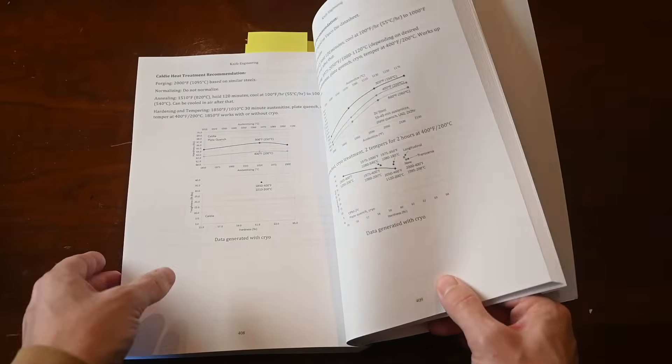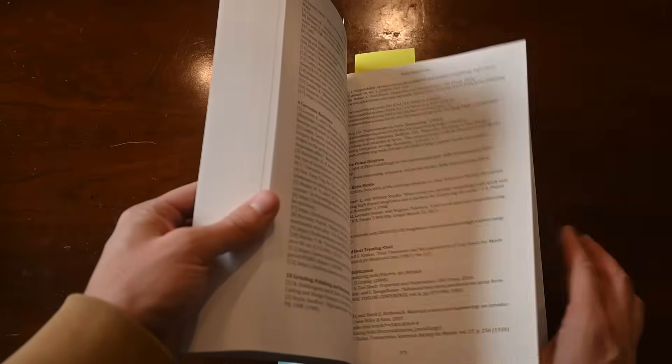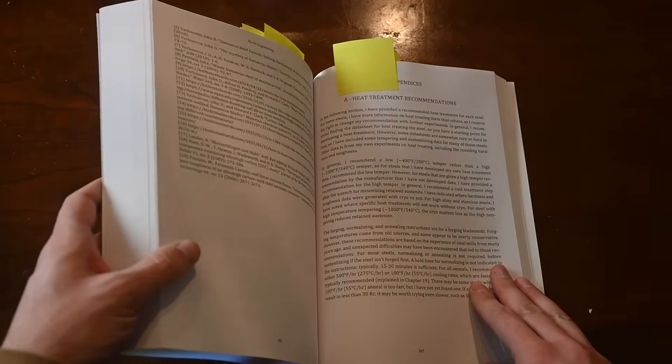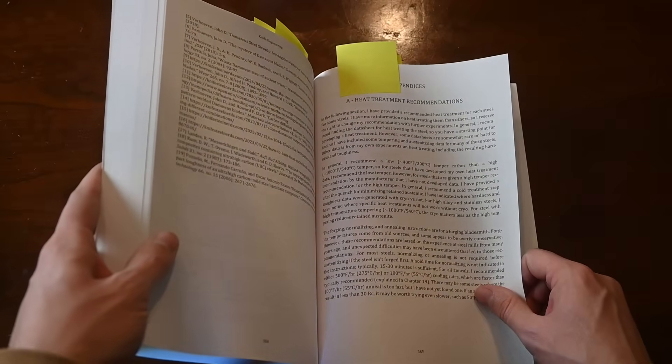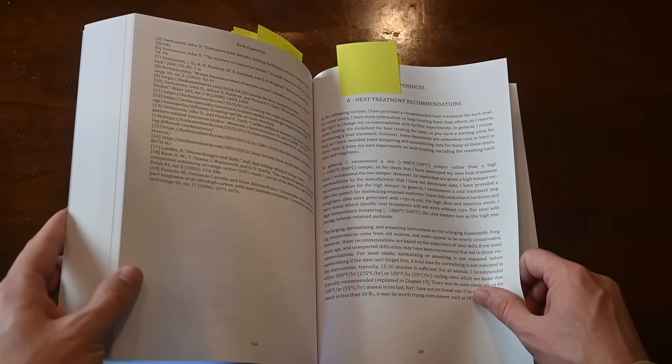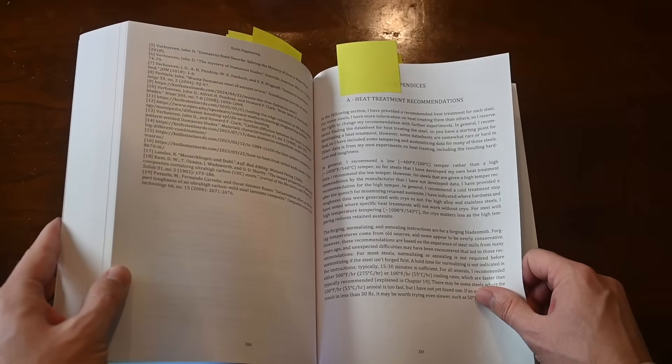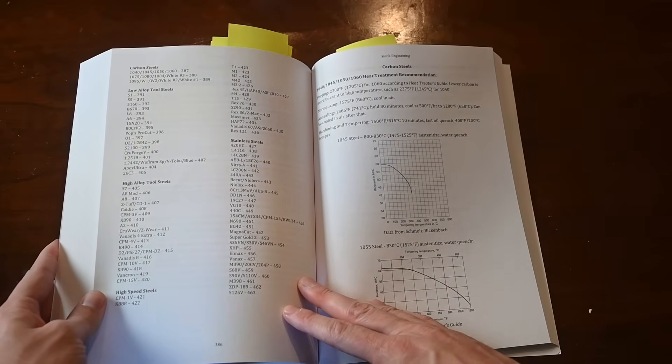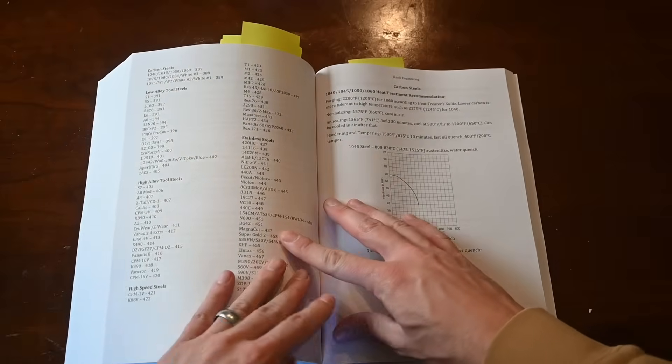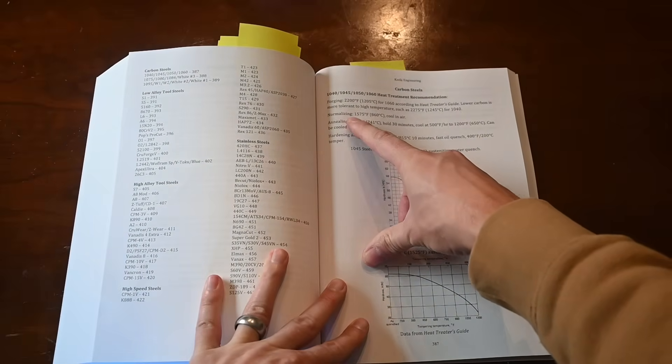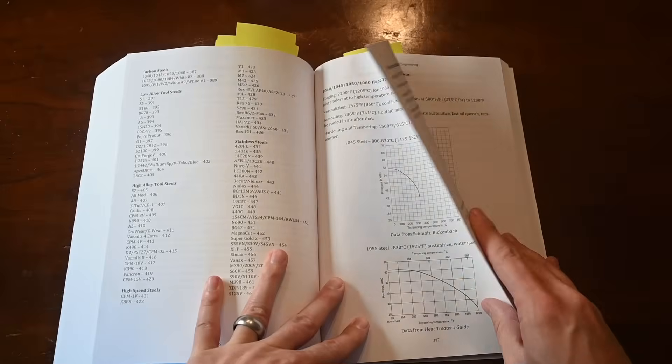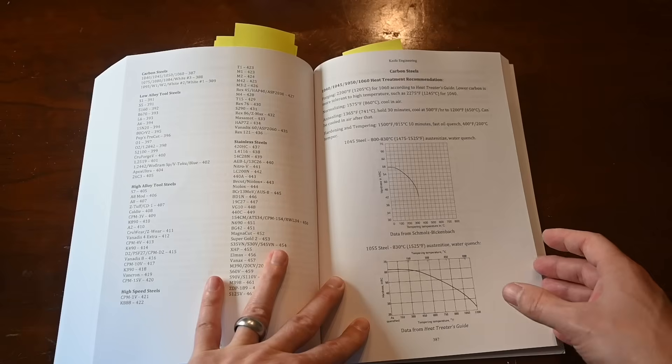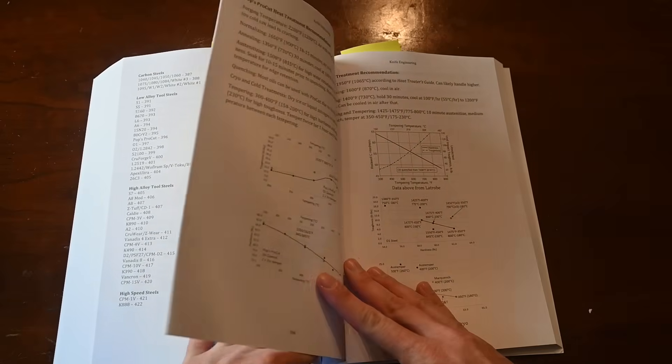The main improvements are just new experiments throughout that give better information about how to heat treat and how steels work. Another thing that surprised me about the first edition was just how popular the heat treatment recommendation section was, so I beefed that up for the second edition. I have a table of contents for all the steels and included recommended forging temperatures, normalizing temperatures, and annealing temperatures for every steel.